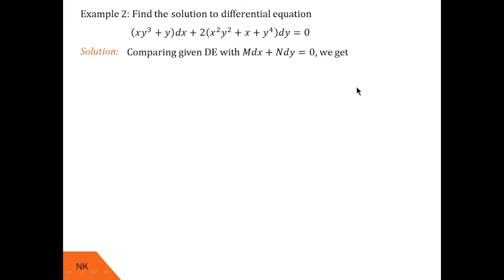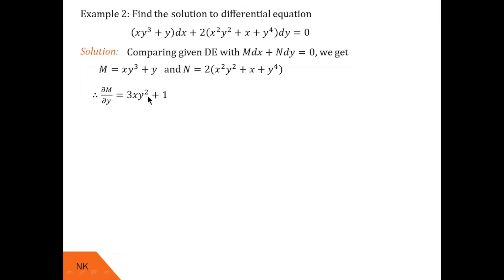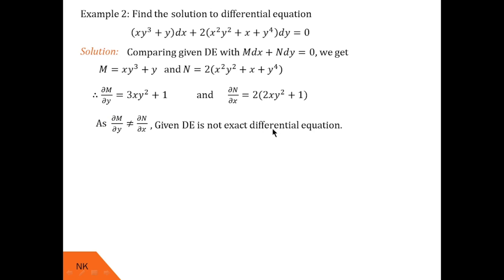The next differential equation is (xy³ + y) dx + 2(x²y² + x + y⁴) dy = 0. First we check whether it is exact by comparing with M dx + N dy = 0 to identify M and N, then finding partial derivatives. We find ∂M/∂y = 3xy² + 1 and ∂N/∂x = 2(2xy² + 1). Since both are not equal, the given differential equation is not exact.